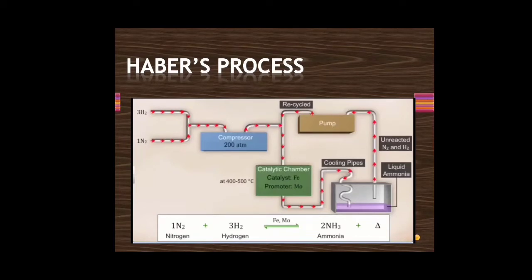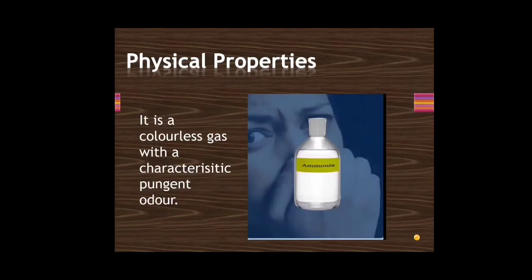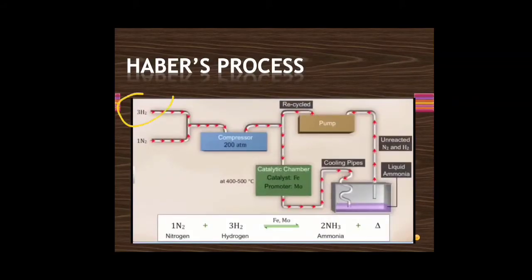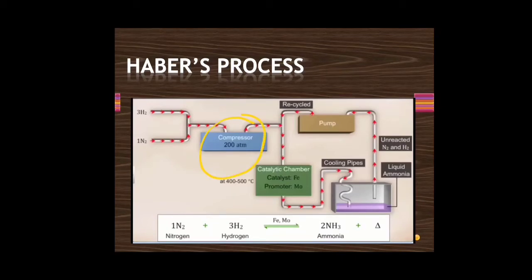Haber's process is the large-scale manufacturing process for ammonia gas. Hydrogen gas is generally obtained from methane or natural gases, and nitrogen gas is obtained from air. These gases are made to pass through tubes and enter into a compressor, where a pressure of 200 to 1000 atmospheres is maintained.